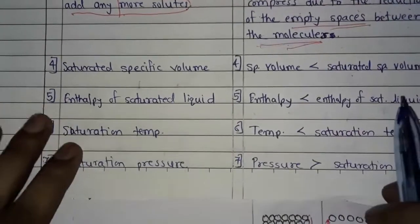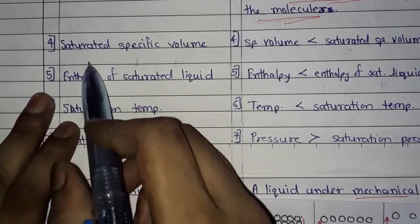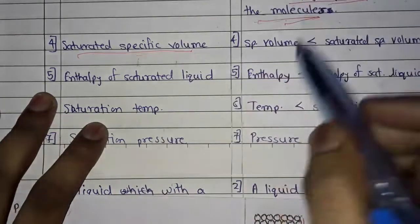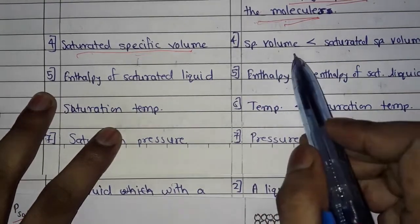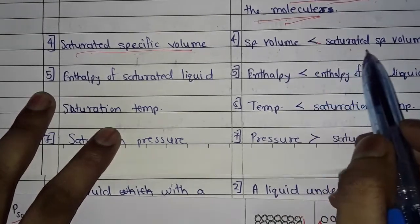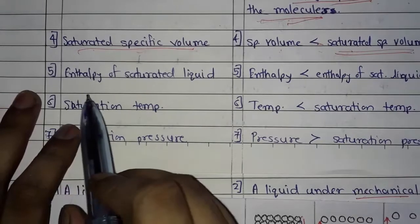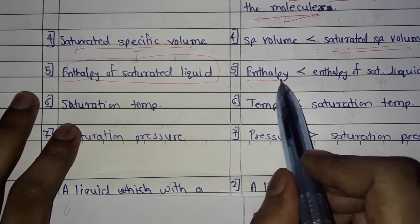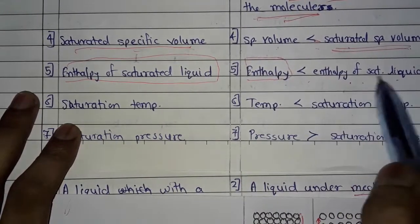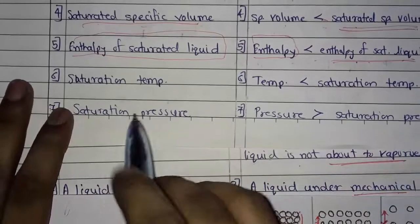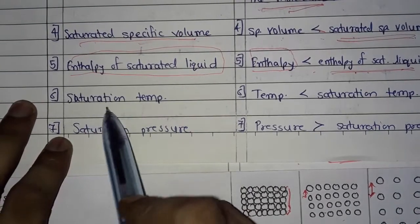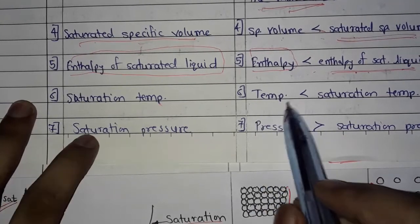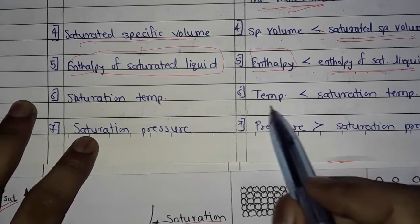Fourth point — specific volume: in saturated liquid we have the saturated specific volume, and in compressed liquid the specific volume is less than the saturated specific volume. Fifth point — enthalpy: the enthalpy of compressed liquid is less than the enthalpy of saturated liquid.